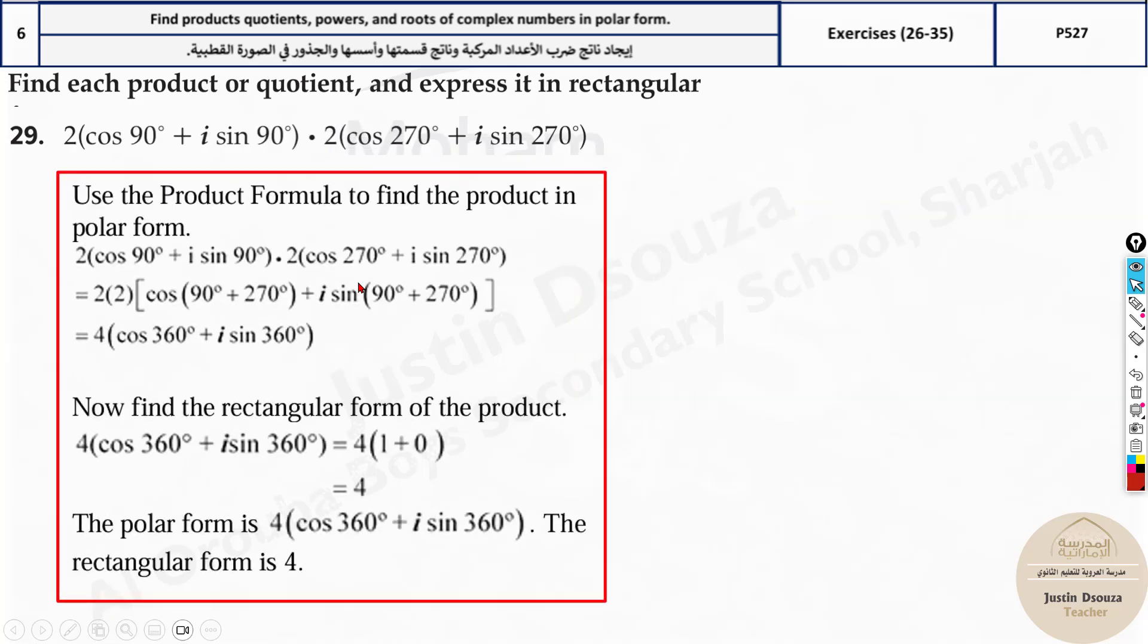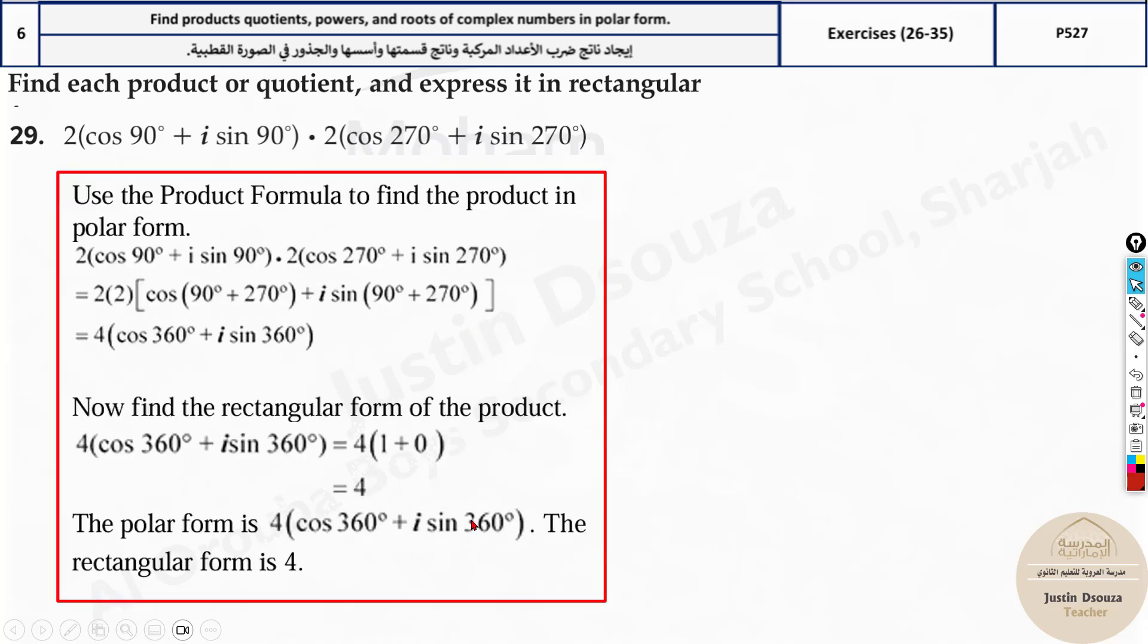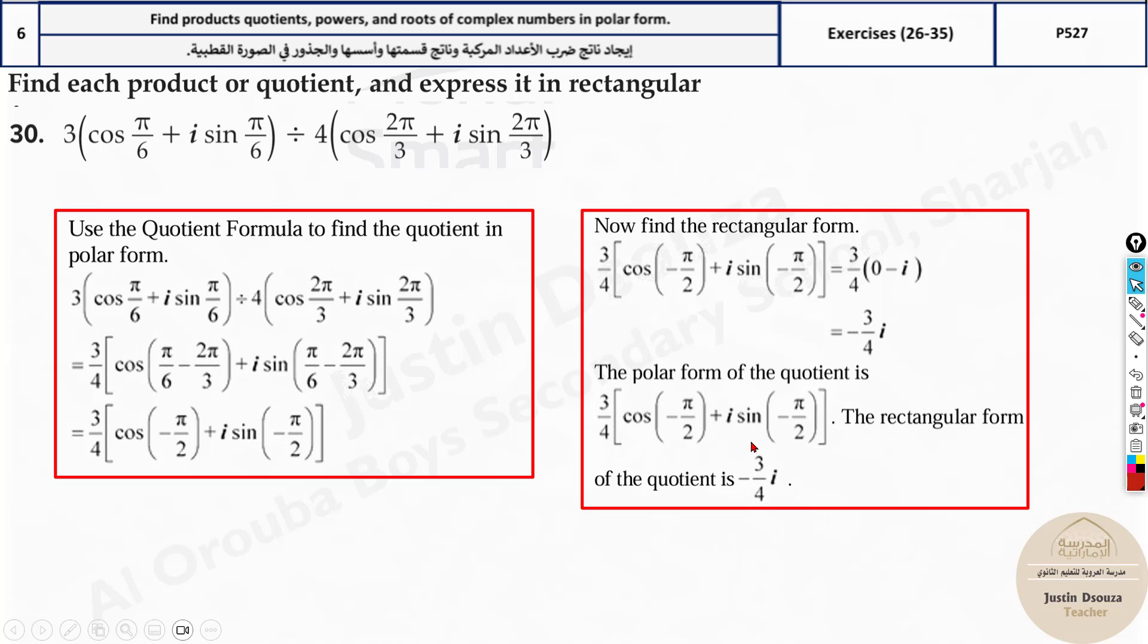So this is how easily you can solve all the problems. Here again it's multiplication. We did a similar problem. Here is the worked out solution. Now what happens is when the imaginary part becomes 0, that part is not written. You don't write 4 + 0. 0i is 0 itself. So only 4 is written. Here also you can work it out by yourselves.